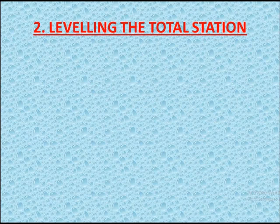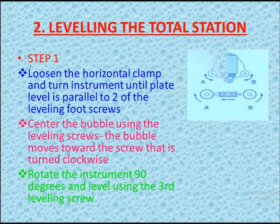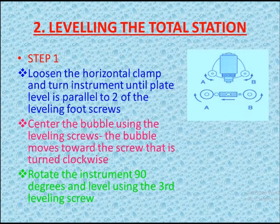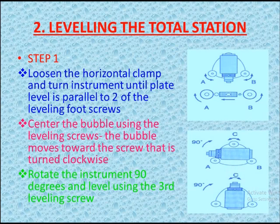The next slide is leveling the total station with the help of foot screws. Loosen the horizontal clamp and turn the instrument until the plate level is parallel to two of the leveling foot screws. Center the bubble using the leveling screws — the bubble moves toward the screw that is turned clockwise. Rotate the instrument 90 degrees and level using the third leveling screw.